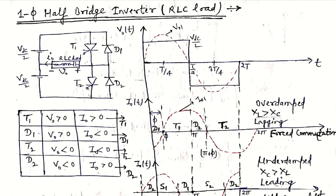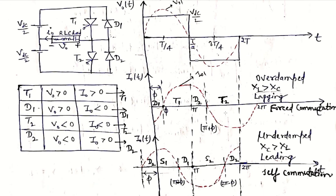In the case where Xc is greater than XL, it will be a leading load case. We draw the current waveform leading by an angle phi, extending the voltage waveform in the negative direction. In the leading load case with Xc greater than XL, it is an underdamped condition where zeta is between 0 and 1. These current waveforms are sinusoidal — the lagging case lags voltage by angle phi and the leading case leads voltage by angle phi.